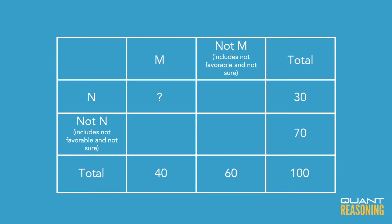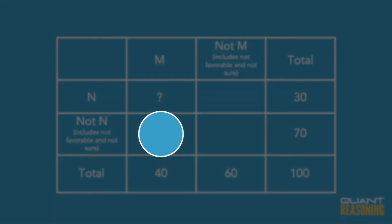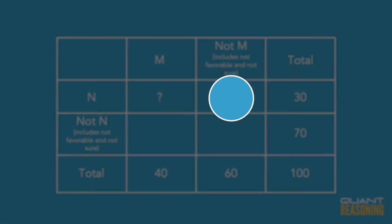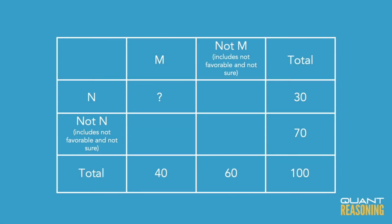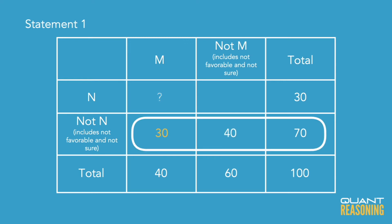Looking at the diagram, there are three unknown cells in addition to the one they're asking about. We don't know the neither-nor cell, and we also don't know the M-not-N and N-not-M cells. But if we're given any one of those three cells, we'd have a path to infer the both-and cell. In the case of Statement 1, it gives us one of those three cells — the neither-nor cell.